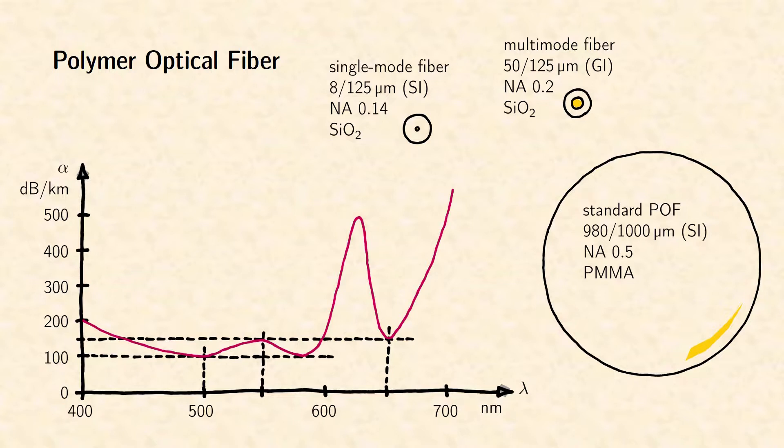For short wavelengths, the transmission is limited at about 400 nm. Photons with shorter wavelengths permanently damage the material and make it opaque. The infrared edge of PMMA starts at about 700 to 800 nm. Polymer fibers are thus used for visible light communication.